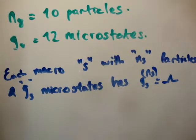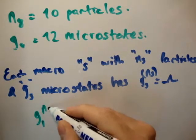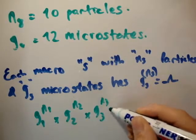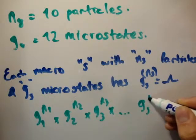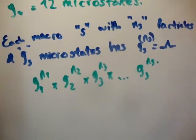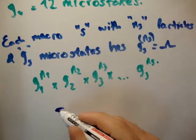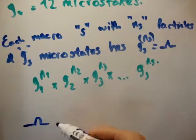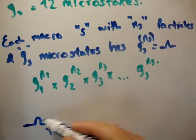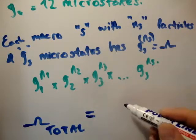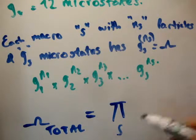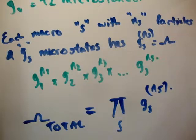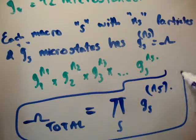So then if you wanted to get the total multiplicity of everything, we have to multiply g1 to the n sub 1 times g2 to the n sub 2 times g3 to the n sub 3, the whole way up to g sub s to the n sub s. Now from the previous video you should know the shorthand of writing this, where sigma means addition and pi means multiplication. So that means the omega total, or the total multiplicity, is pi over s from g sub s to the n sub s. And you should know that that's quite, or should seem that that's quite a large number, because that's in fact what it is.